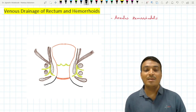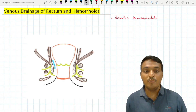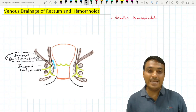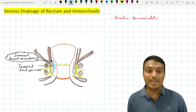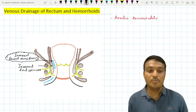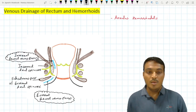There are two sets of plexuses. The first is the internal rectal venous plexus, situated between the mucous membrane and the internal anal sphincter. The second is the external rectal venous plexus, situated between the perianal skin and the subcutaneous part of the external anal sphincter.